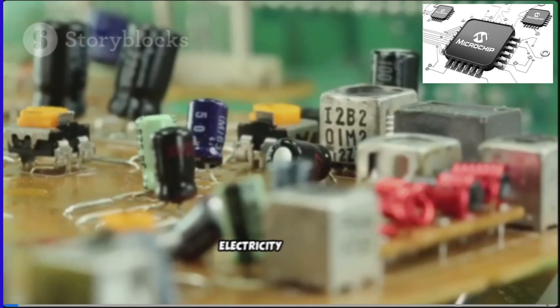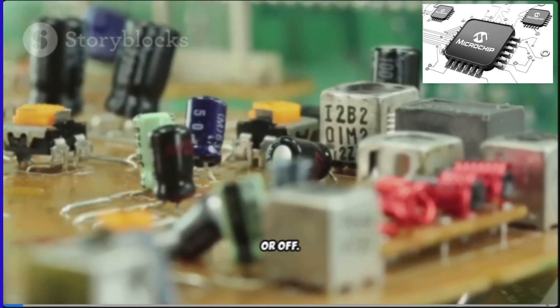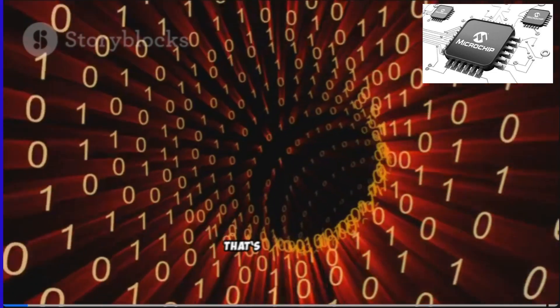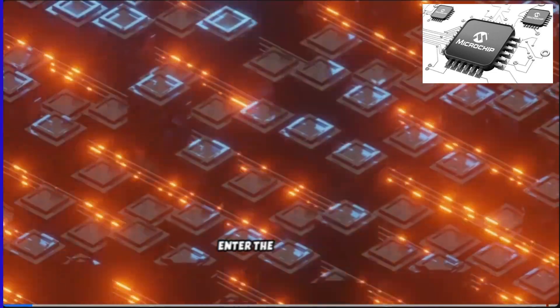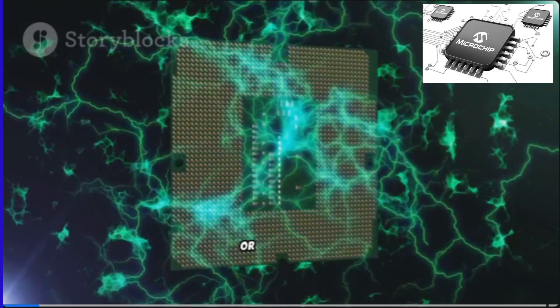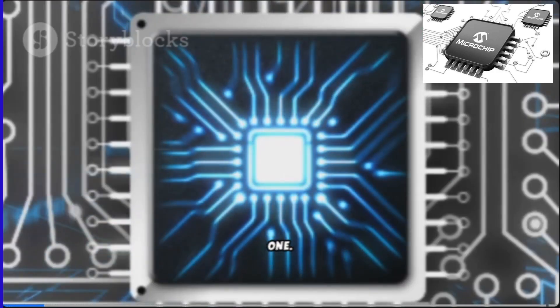Start simple. Electricity can be on or off. One or zero. Bits. That's the alphabet of computers. Enter the transistor, a microscopic switch. It can block current or let it flow. Off, on, zero, one.